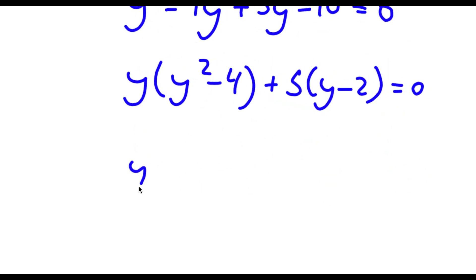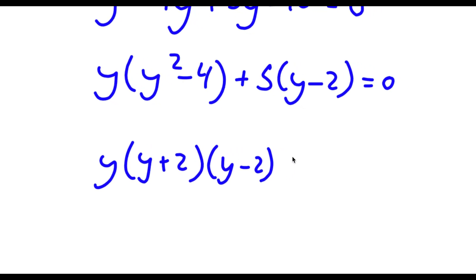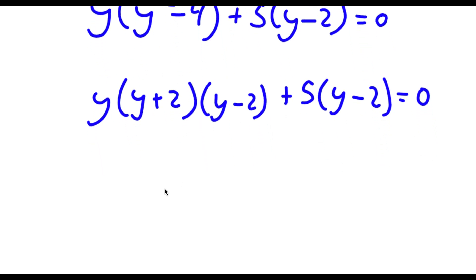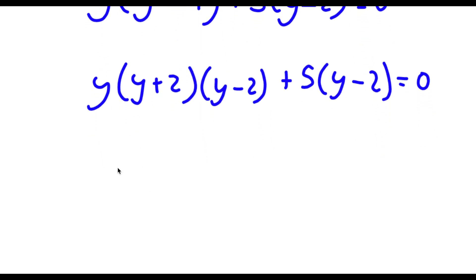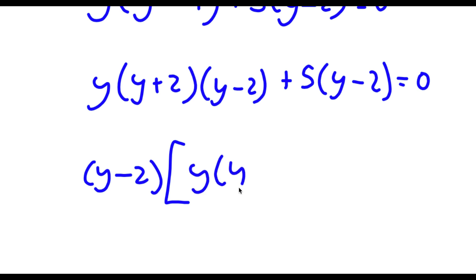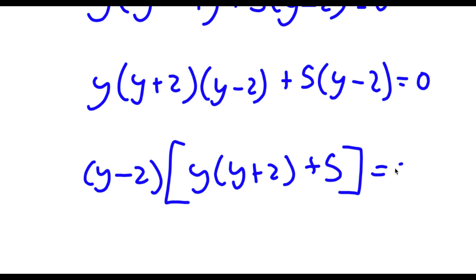Now y squared minus 4 is the same thing as y plus 2 times y minus 2. So I have y times y plus 2 times y minus 2, plus 5 times y minus 2 is equal to 0. If I factor out y minus 2 from this, I get y minus 2 times y squared plus 2y plus 5 is equal to 0.